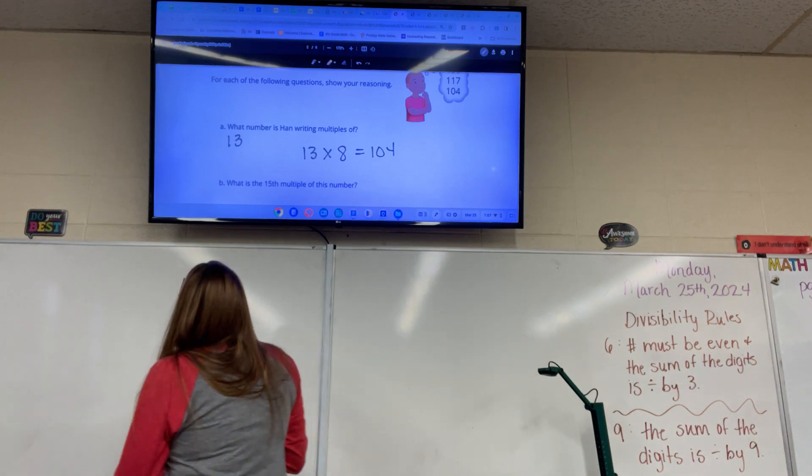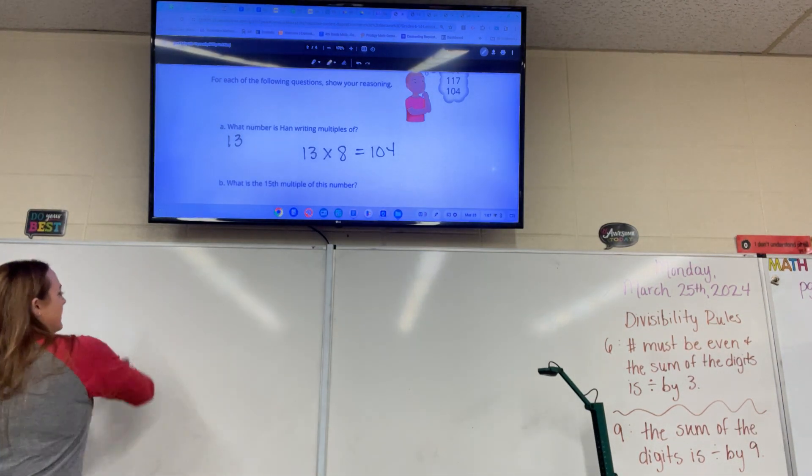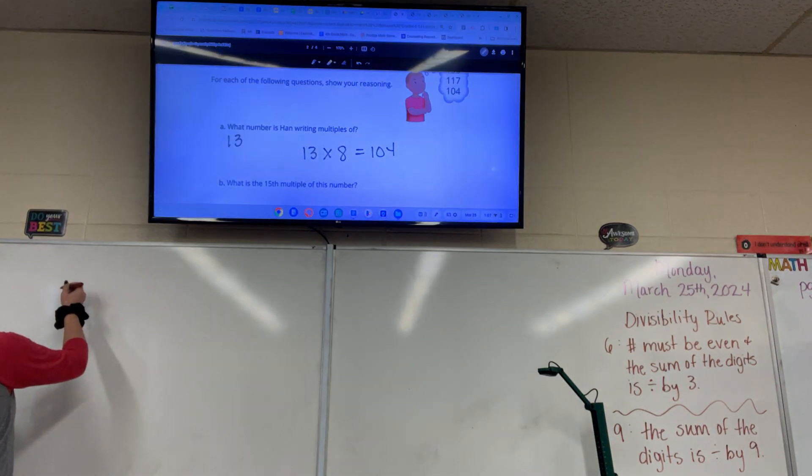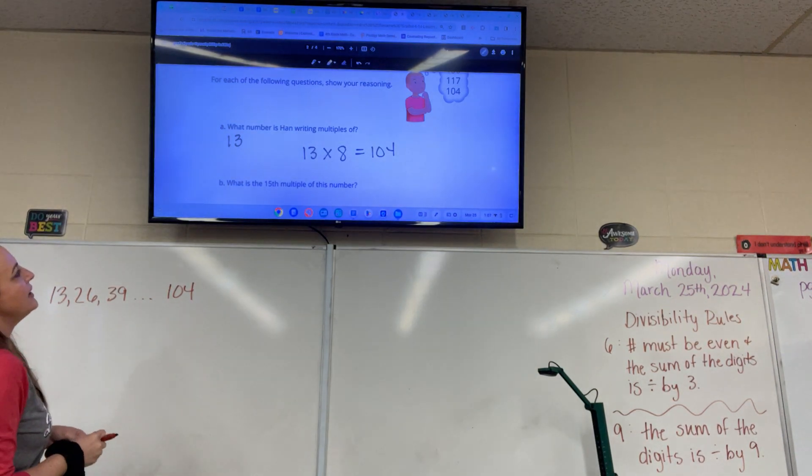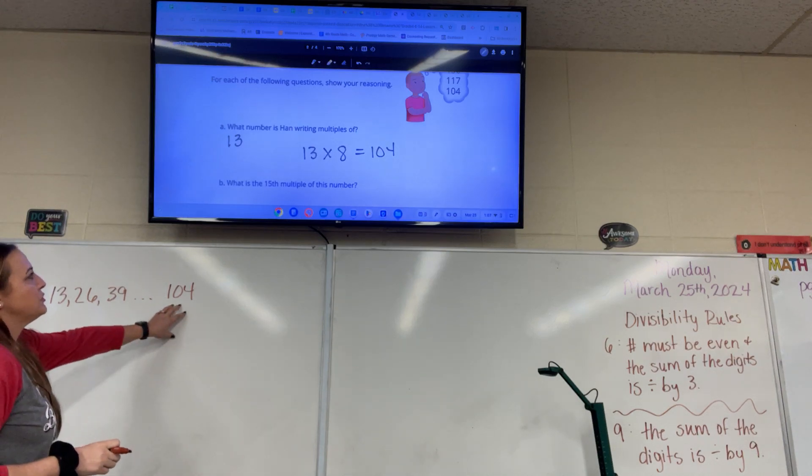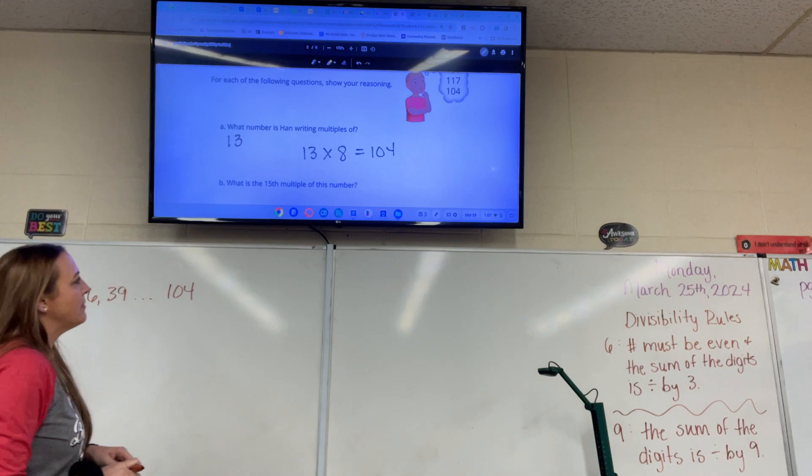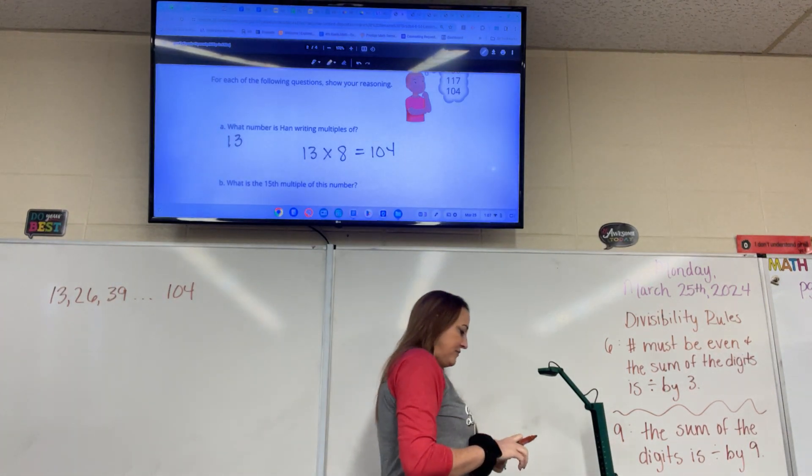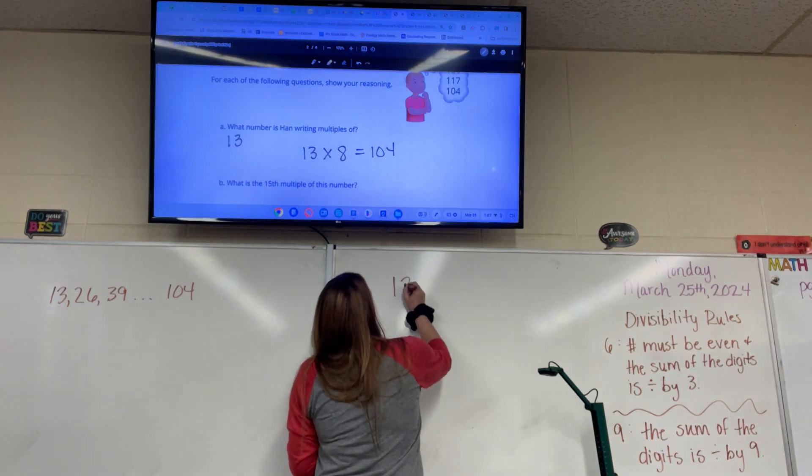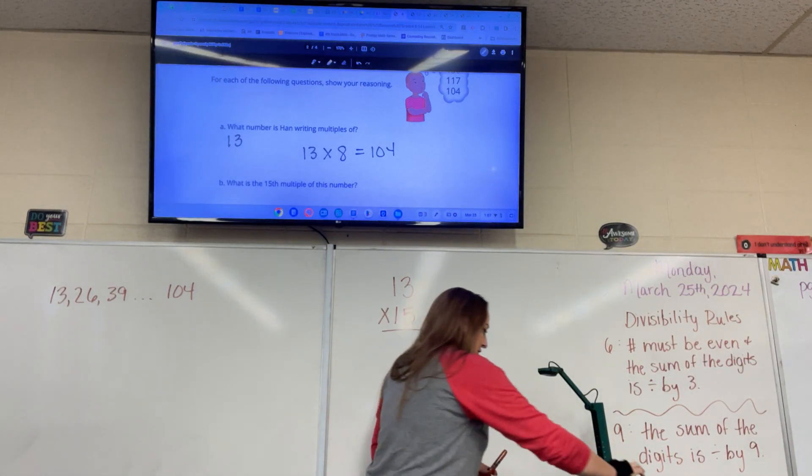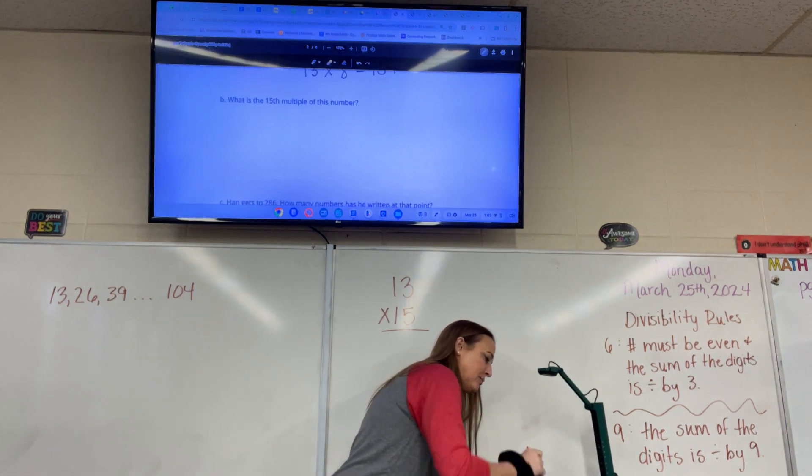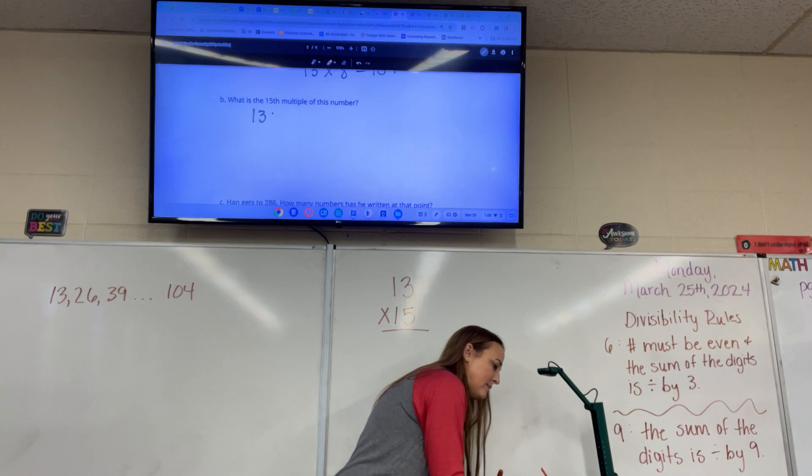So if he keeps going, and he's listed 13, 26, 39, and then he lists 104. And it says, what is the 15th multiple? That is the 8th. So if he kept going, what would be the 15th multiple? We can figure that out by multiplying 13 times 15. And we're going to do an area model on this. So we're going to multiply 13 times 15, and I want you to draw an area model over here on the side. And how many sections is it going to have?